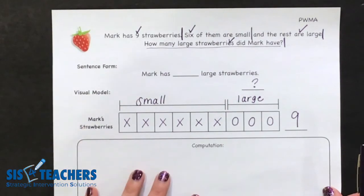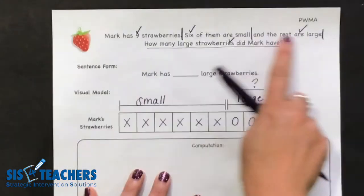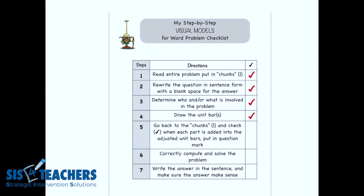I have all my checks in my chunks, so I'm going to go back to my checklist and check off that step because I went back in my problem, put the chunks in, and put the checks. You want to make sure that kids are really putting all of the details in their model drawing. This visual model should really be enough that I could look at it and know what the story problem is saying.